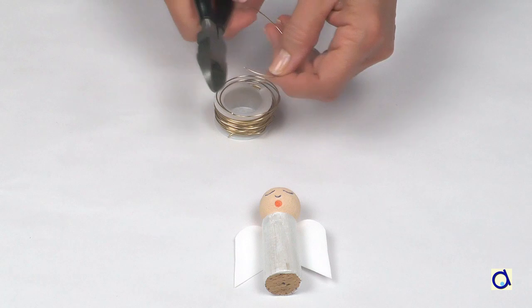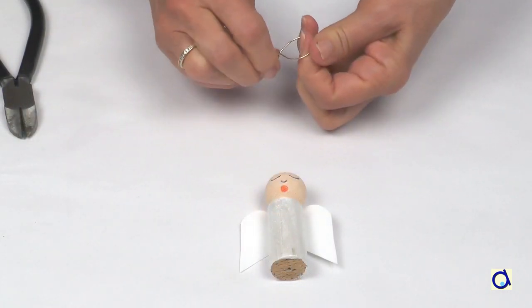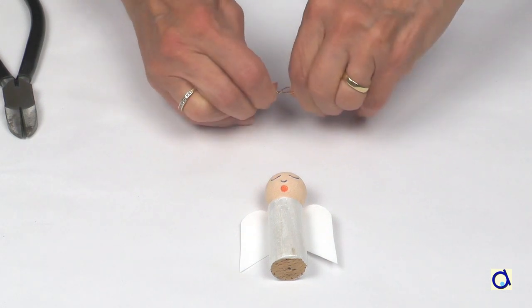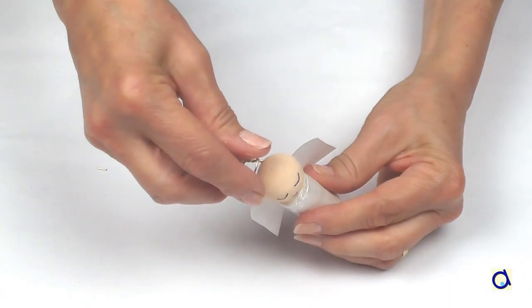Cut a piece of gold wire. Make a ring to form the angel's halo. Twist the ends together. Push the end in the back of the styrofoam ball.